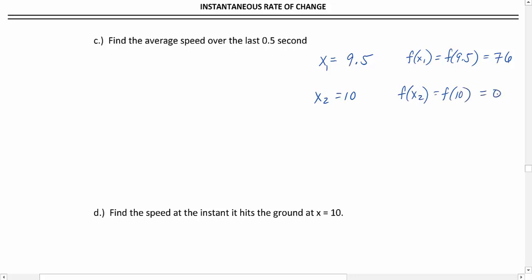So let's plug into our average rate of change formula: f(x₂) - f(x₁) over x₂ - x₁. This will be negative 76 over 0.5. When we divide that, negative 152, and our unit again is feet per second.